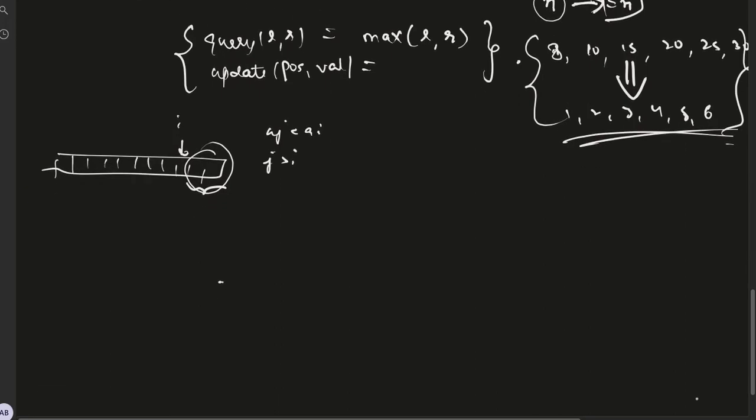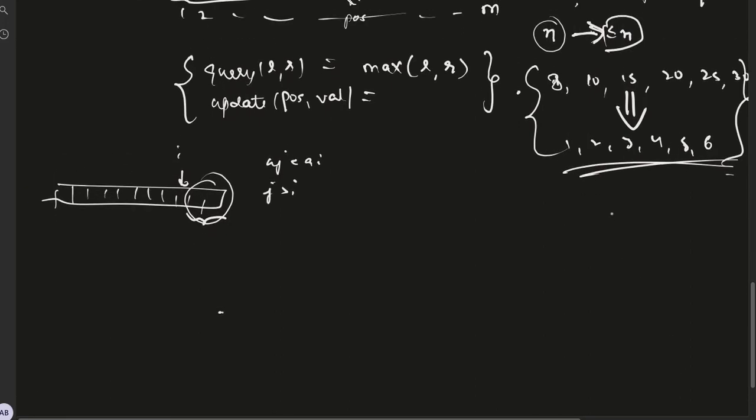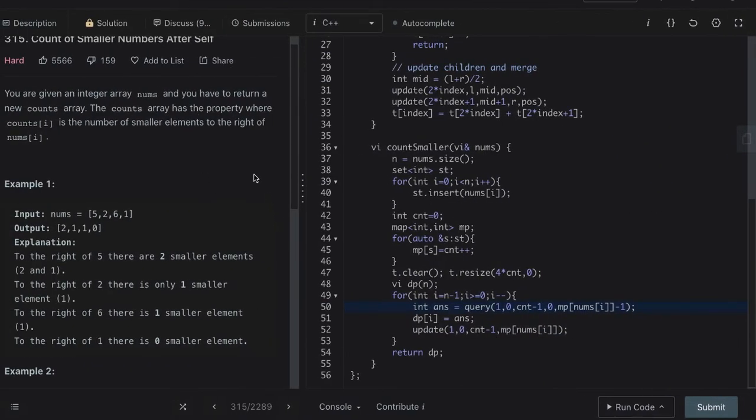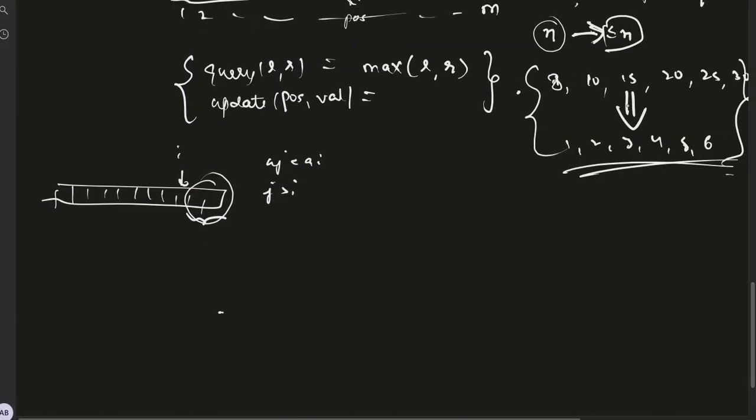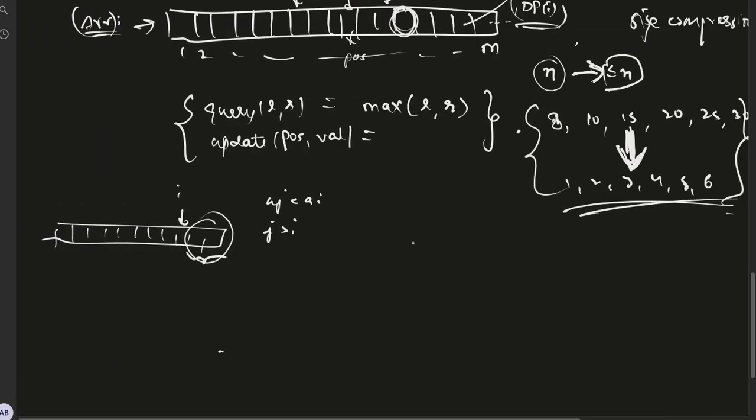We are just bothered with the ordering because in this question we just need the ordering to be preserved. This transformation does not hamper the ordering of elements, and hence this transformation is safe to use. Once this transformation is done, we can ensure that the size of ARR would also be less than or equal to n. This is being ensured by compression.